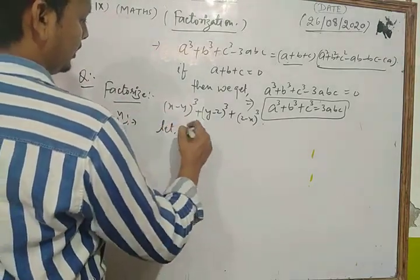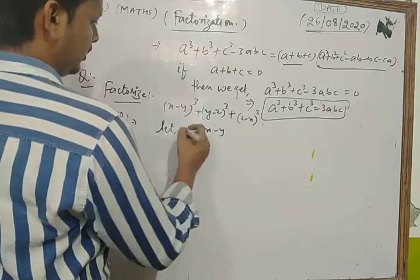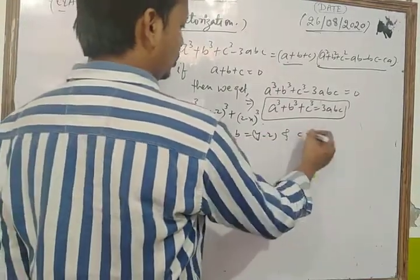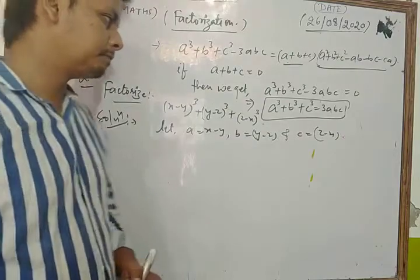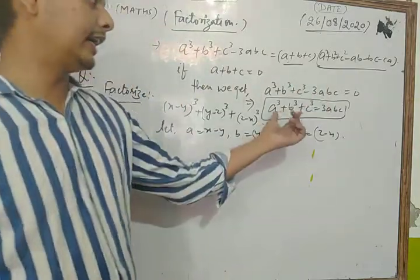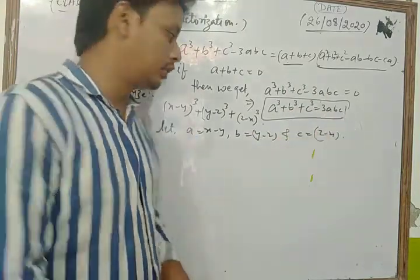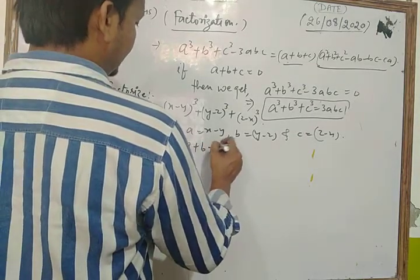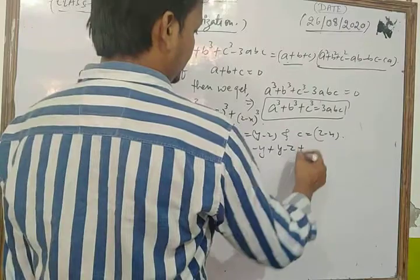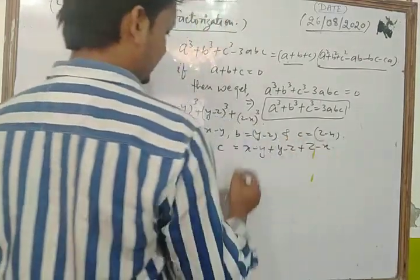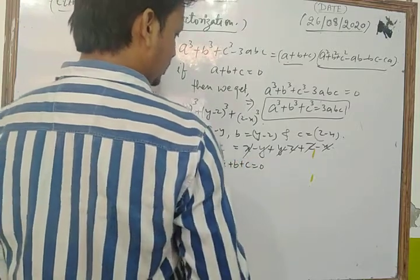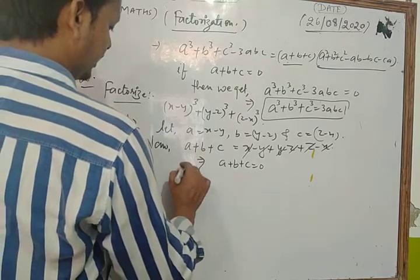For the solution, let a = x - y, b = y - z, and c = z - x. First we find the value of a + b + c. We get (x - y) + (y - z) + (z - x), and each term cancels the other, so a + b + c = 0.